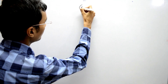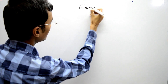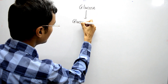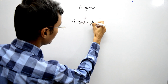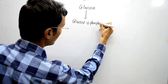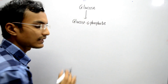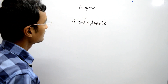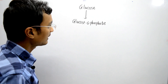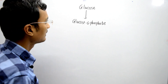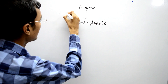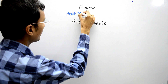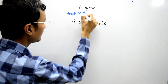First, glucose is converted into glucose-6-phosphate. This is an irreversible step and it is catalyzed by an enzyme called hexokinase. So hexokinase catalyzes this irreversible step.